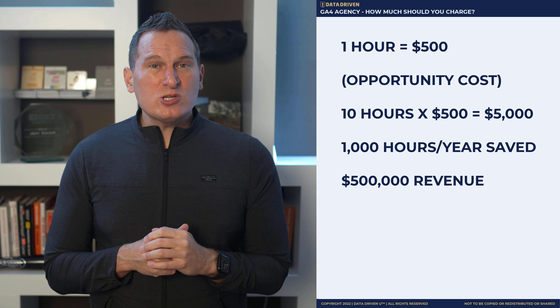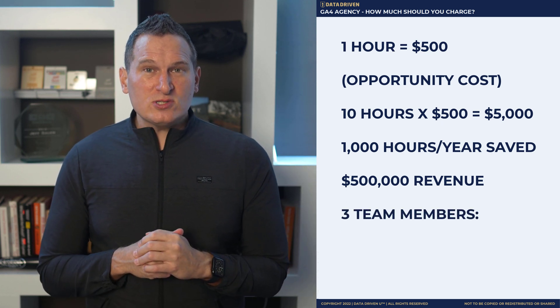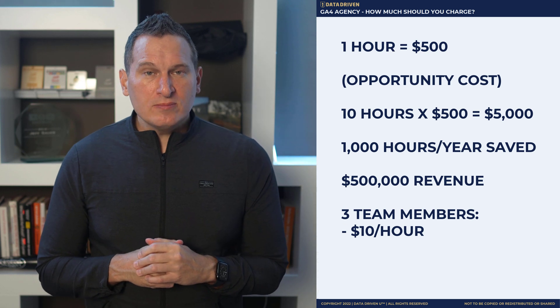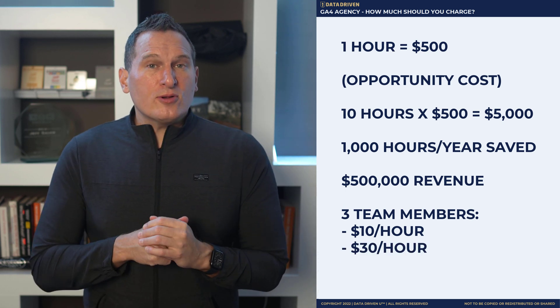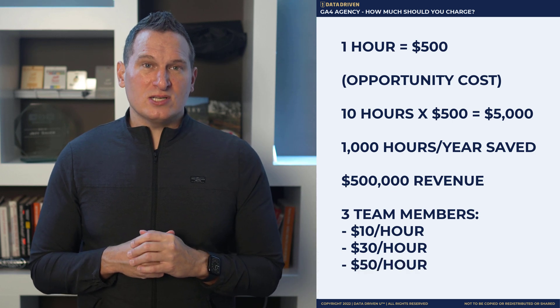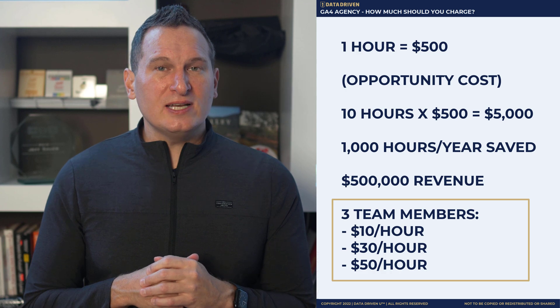Now let's say you have three members on your team implementing the process you developed. One is doing beginner-level service and earns $10 an hour, another does intermediate-level service at $30 an hour, and the third, who's an expert, earns $50 an hour. When you hand this process to your three team members, it averages out to $30 an hour each. If each team member takes 1,000 hours to complete, that's $90,000 in labor costs — but your company makes $500,000 in new projects minus that $90,000 in labor costs.